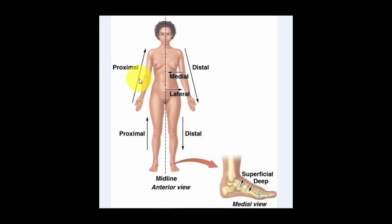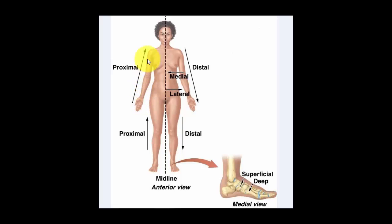For example, here is the elbow region. The elbow would be proximal to the wrist, because the elbow is closer to where the arm attaches. The wrist however would be distal to the elbow, because the wrist is further away from the point of attachment — and that is why it is referred to as distal.